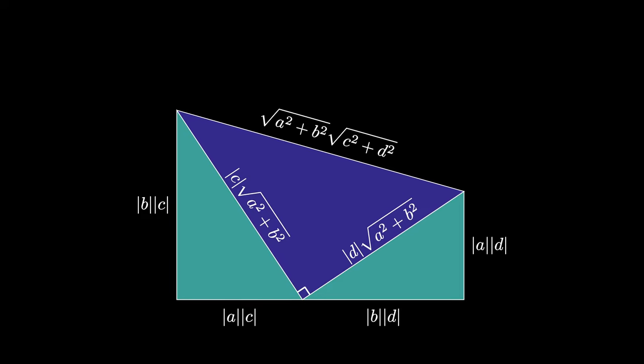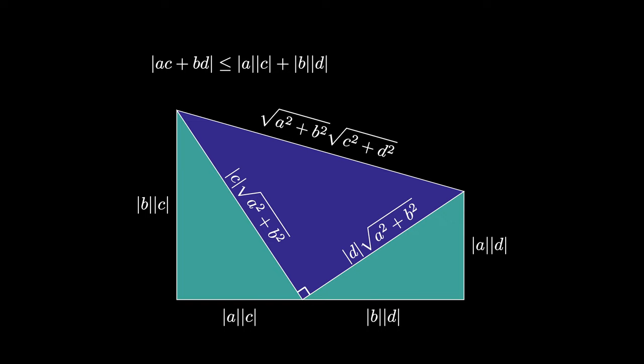But now we know that the absolute value of AC plus BD is less than or equal to the absolute value of A times C plus the absolute value of B times D, from the triangle inequality.